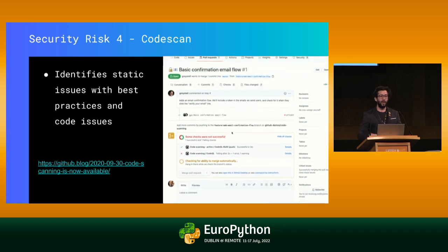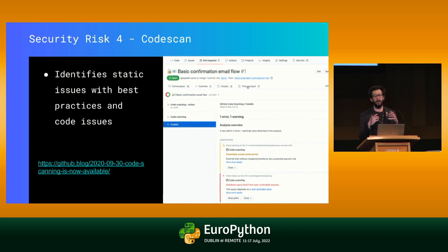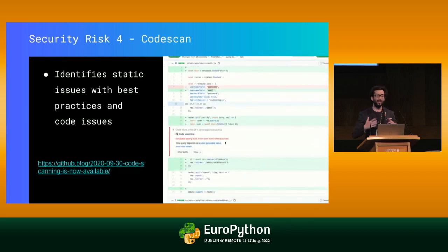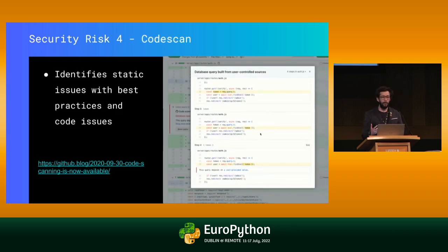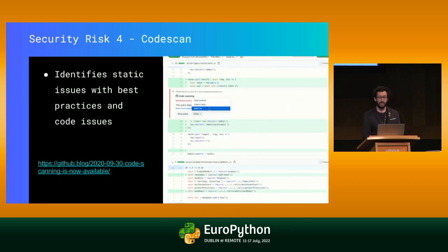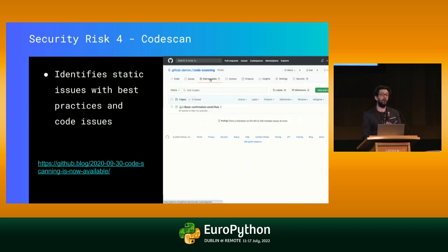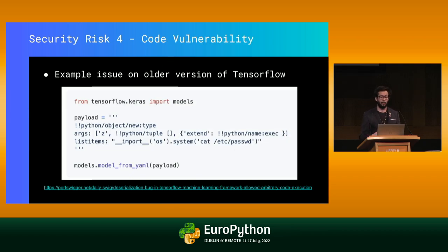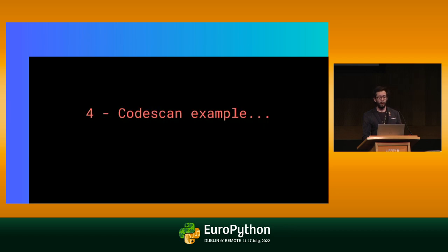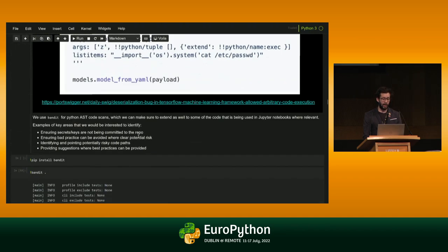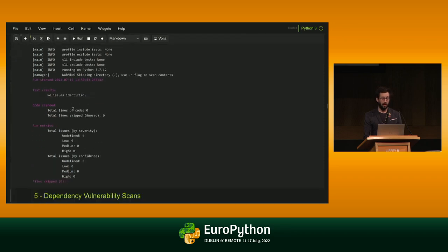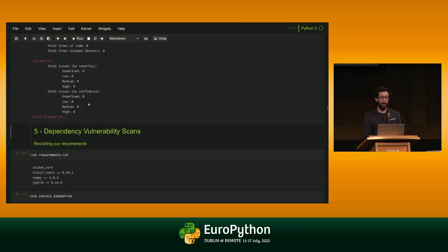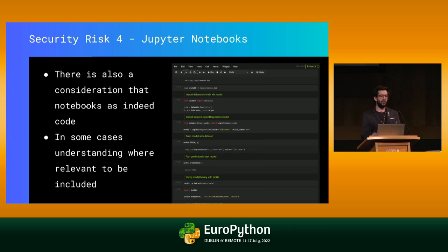Moving to the next part: code. We tend to forget that as practitioners we may be writing Jupyter notebooks, thinking it's not the same as writing a web application. But once it reaches a certain use or scale, it becomes analogous to code itself and has the same potential challenges. Code scan tools are very useful for these situations, especially given some vulnerabilities we've seen — like the vulnerability in the PyYAML package that affected a lot of libraries. We show how to use tools like Bandit, which allows you to search across your Python project and identify any vulnerabilities — low, medium, large. This also encompasses Jupyter notebooks.